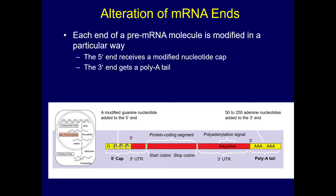Each RNA molecule needs to be modified after transcription. They add what's called a cap and a tail, which allows the RNA to do what it needs to do and also helps it when it's going to make the protein later on.